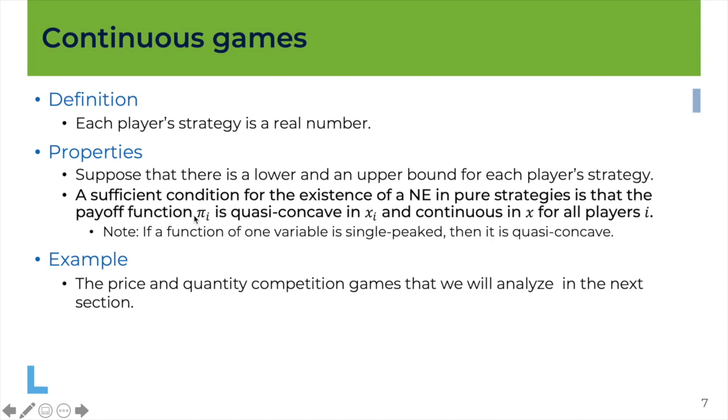What does it mean quasi-concave? It means basically that there is a single peak in the function. So behind this what you need to remember is that the games we are going to look at where firms, for example, choose a price or choose a quantity, these are continuous games that fulfill these conditions here. And so basically we will find a Nash equilibrium in pure strategies without any problem. I will tell you when there are problems but most of the time this will be satisfied so we don't need to worry too much about the existence of a Nash equilibrium.